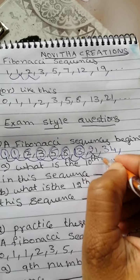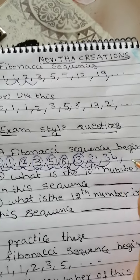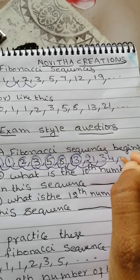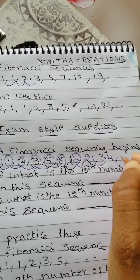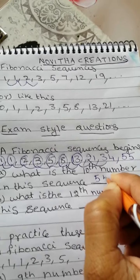So 21 add 34 will give you 10th number of this sequence. 21 add 34 will give you 34, 1, 35 and then 20. So 55. 55 is the 10th number of this sequence.